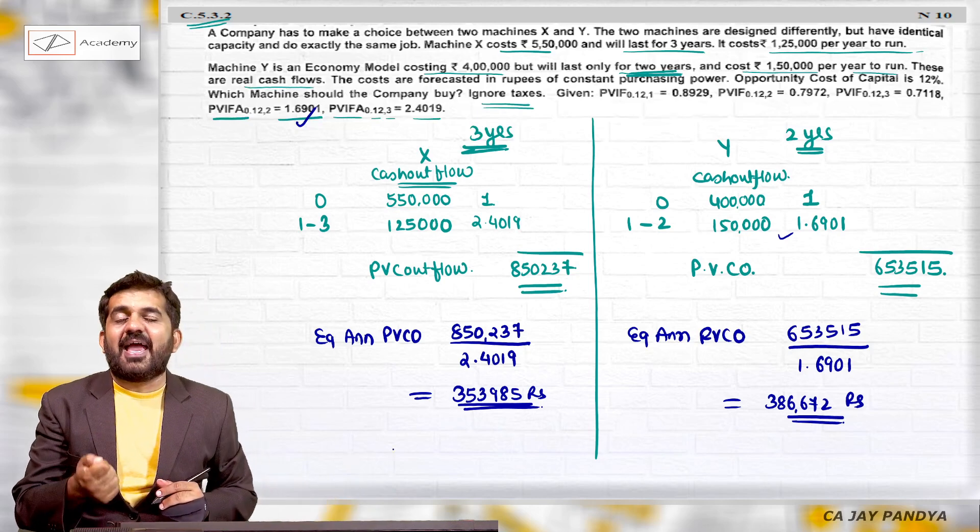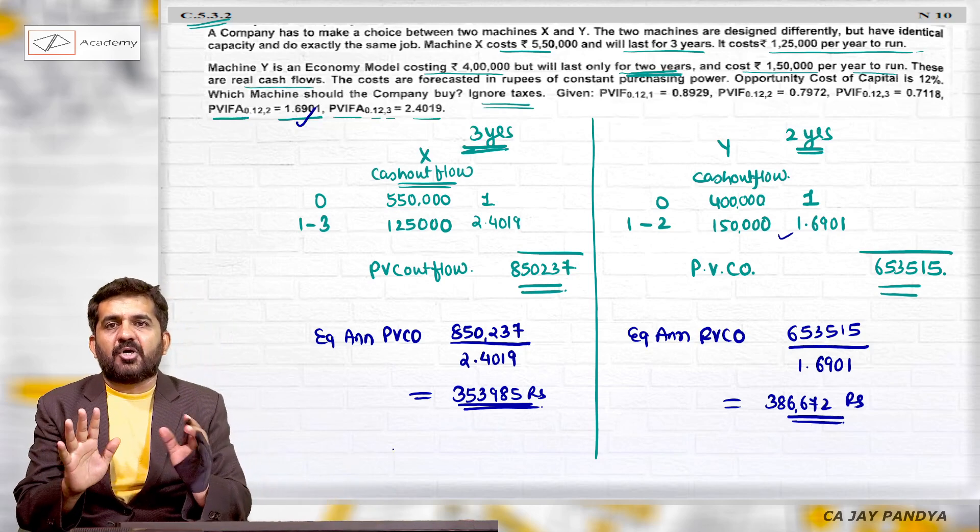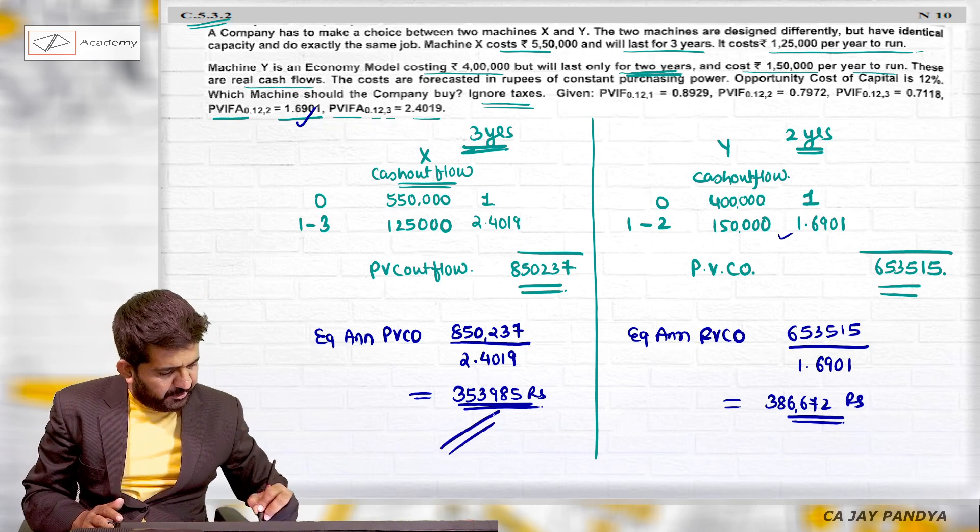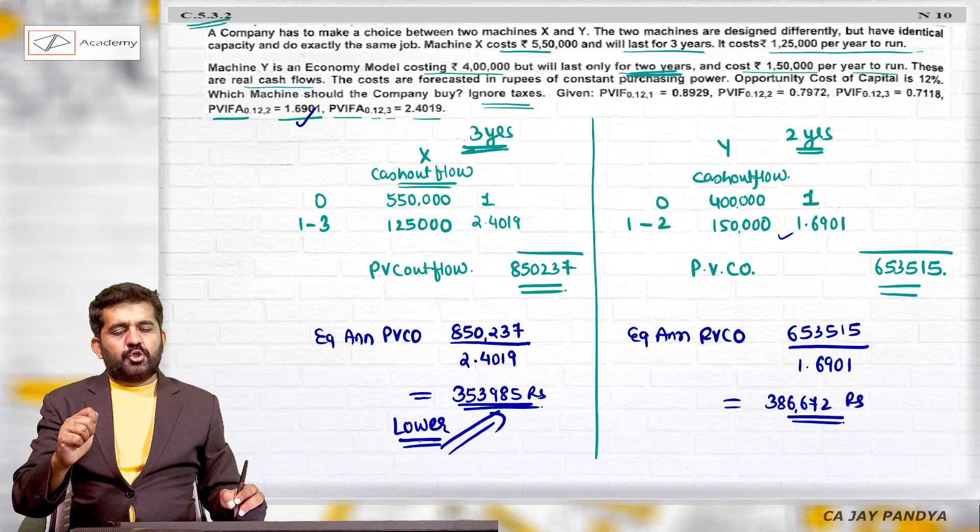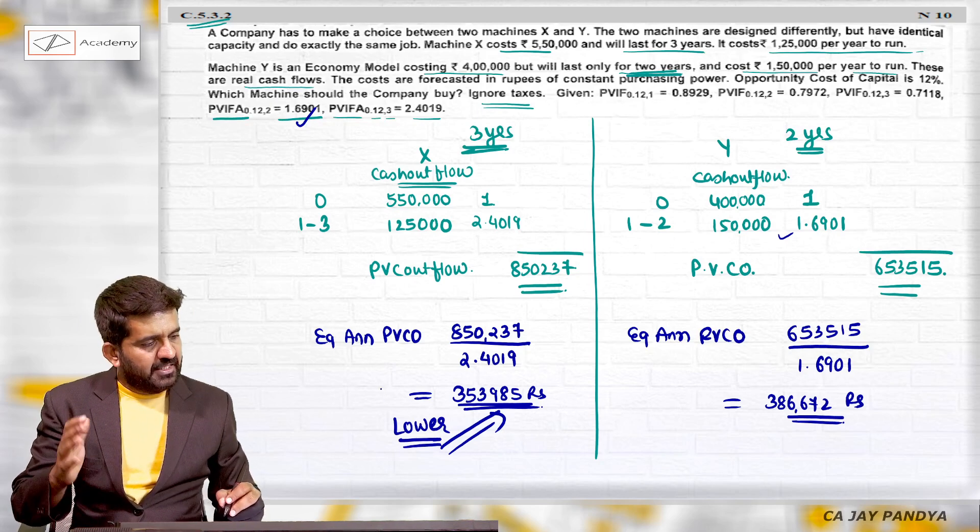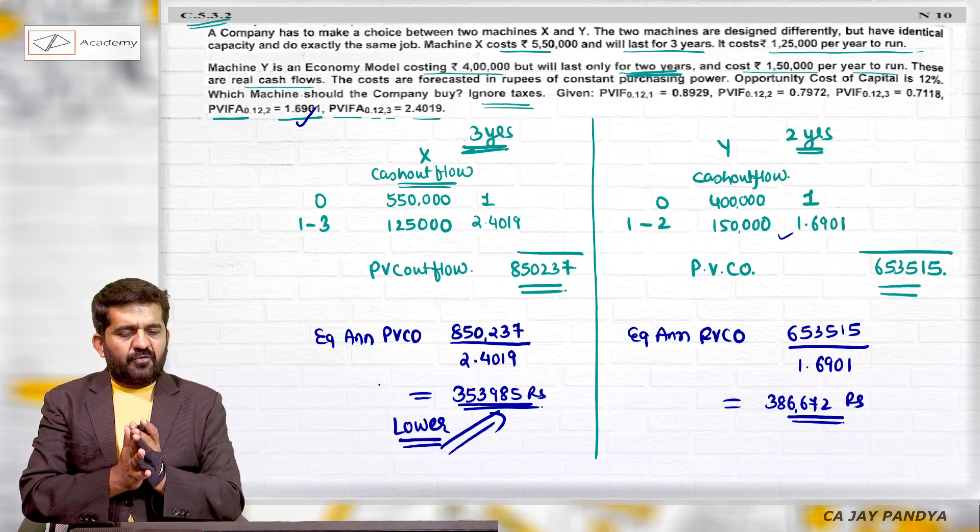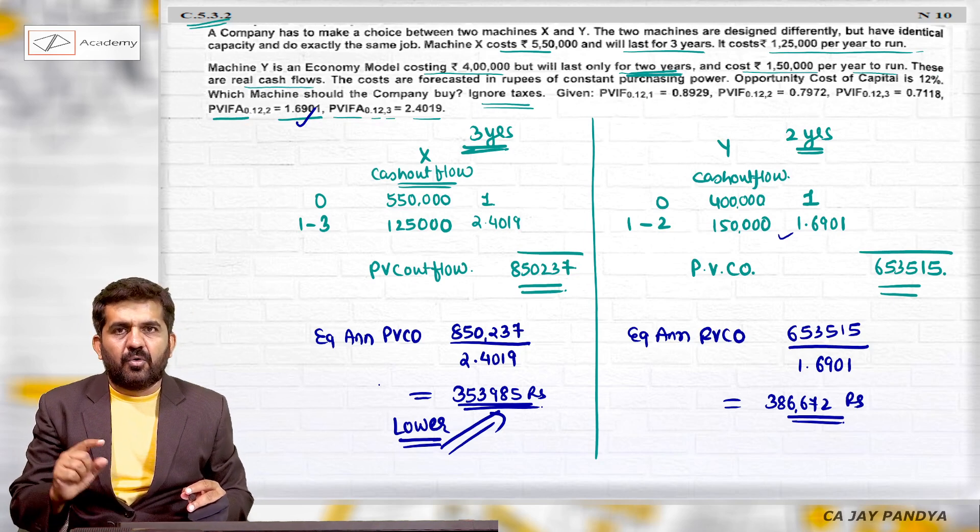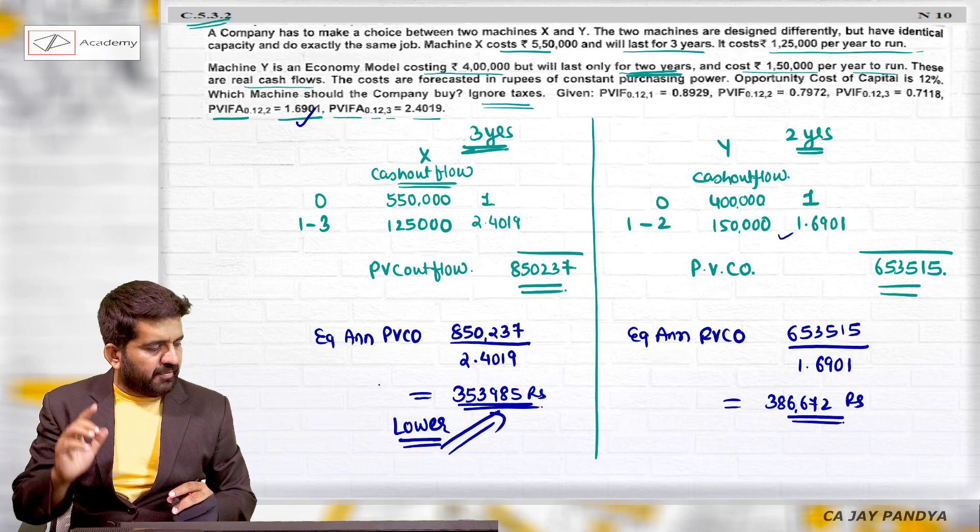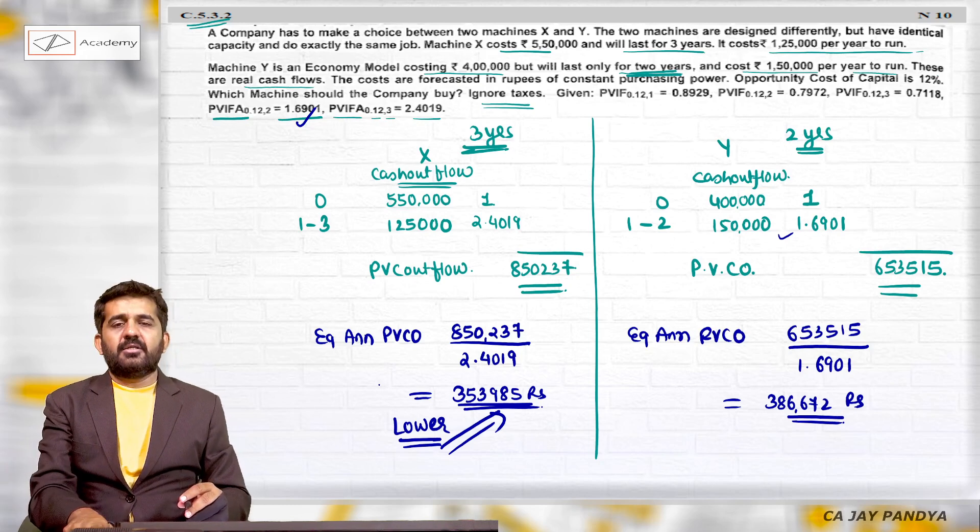Where equalized, the annual - that is per annum converted figure - is lower over here. And so we should select Machine X in place of Machine Y because the equalized annual present value of cash outflow is lower in this case.